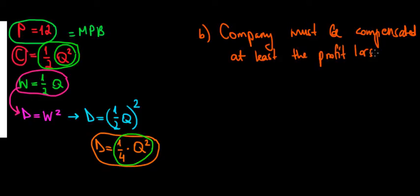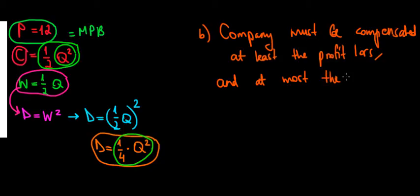We're going to calculate what that profit loss is. And at most, what is the farmer going to give the company? For the farmer, the benefit is that the damage is going to be reduced — that extra value is what the farmer can pay at most to the company. So at most, the company will be compensated by the damage reduction. Because we're dealing with the private versus social optimal case, we have to solve for both cases one by one and compare the difference in profit and the difference in damage.